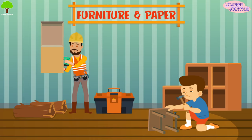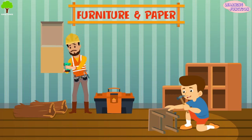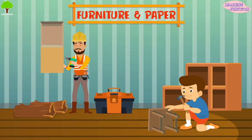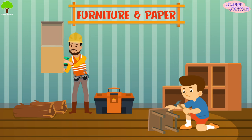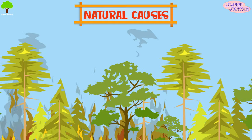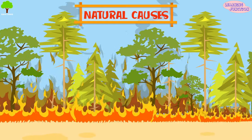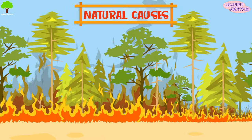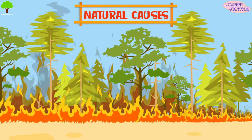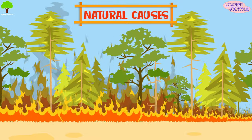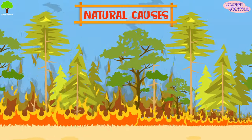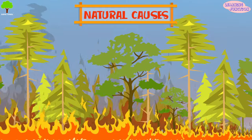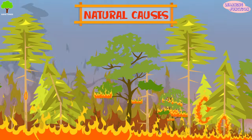Furniture and paper – trees are cut to obtain wood. Wood from trees is used to make furniture and paper. Natural causes – deforestation also occurs due to natural causes like forest fires, flood, climate change, and drought.